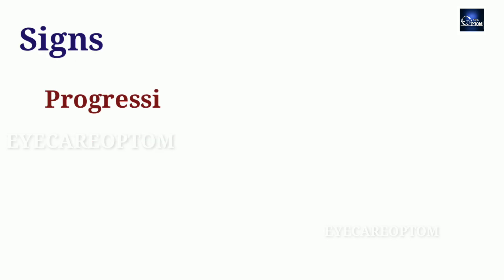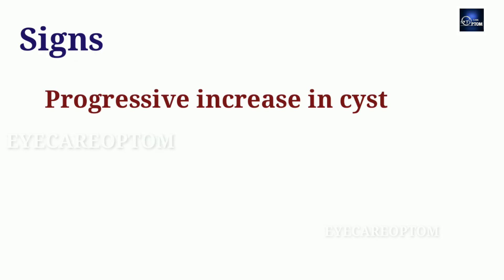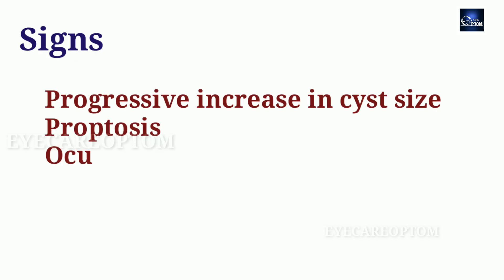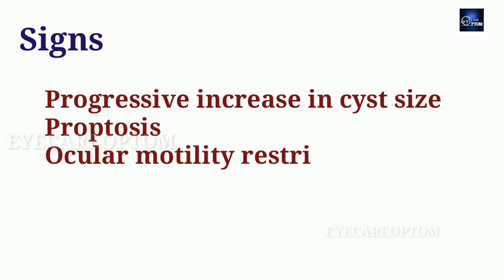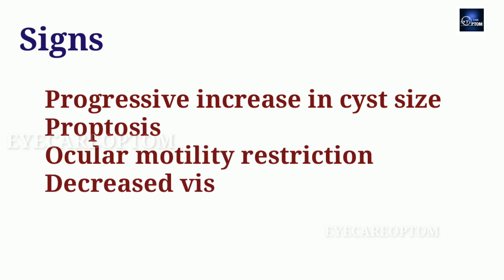Signs of this condition: we can look for a progressive increase in cyst size and proptosis, oculomotility restriction, and decreased visual acuity in some cases.